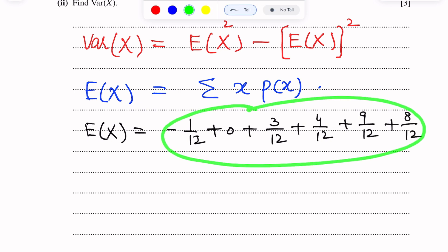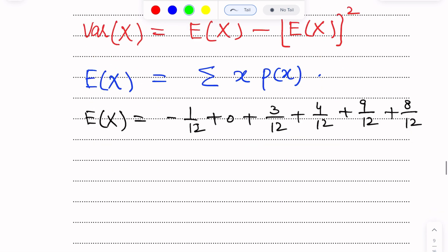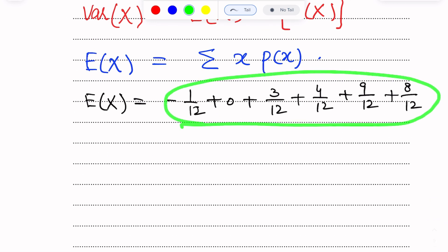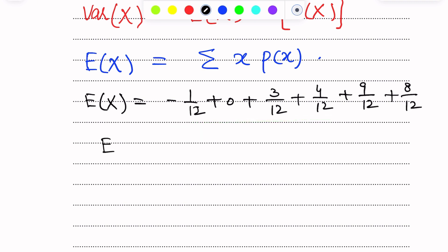So we get the mean. E(X) equals minus 1/12 plus 0 plus 3/12 plus 4/12 plus 9/12 plus 8/12. After simplifying, E(X) equals 23 over 12.